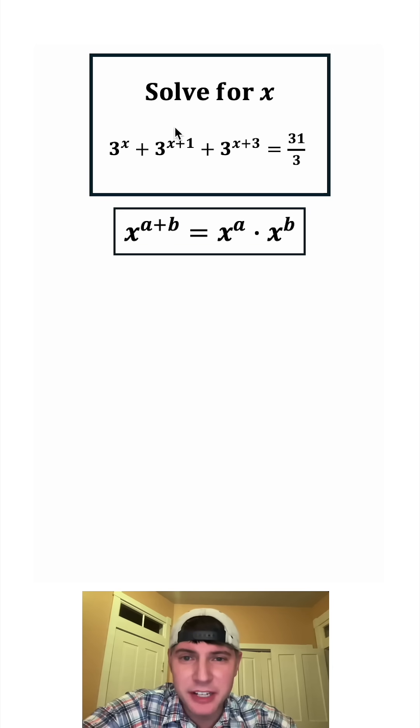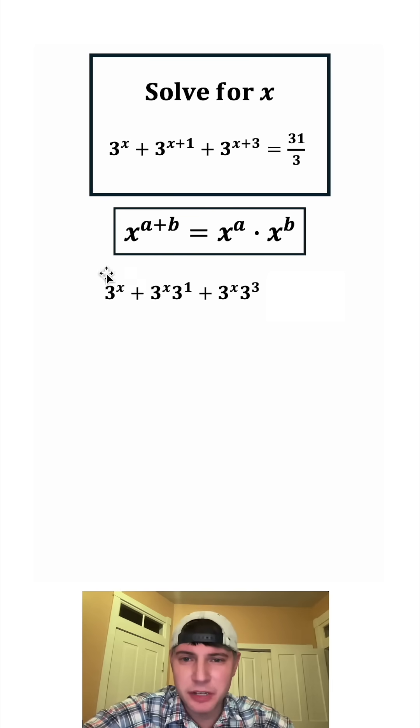So this 3 to the power of x plus 1, that's going to change into 3 to the x times 3 to the 1. And this 3 to the x plus 3 is going to change into 3 to the x times 3 to the 3. So these both changed using these notes. And then this 3 to the x, we can bring it down and we can bring down the 31 thirds.